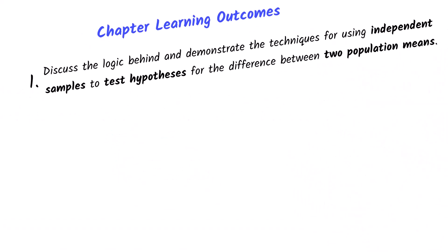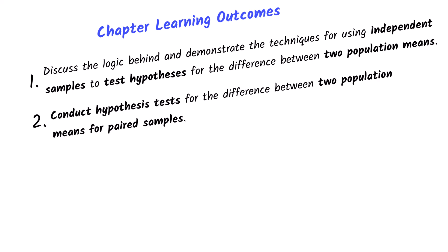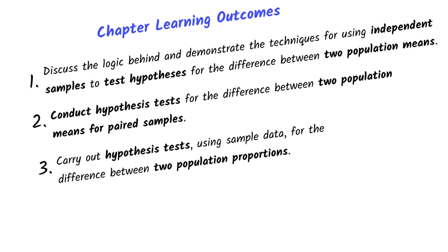For chapter 10, we'll be skipping the estimation process for two population means. However, in this video we'll discuss the different hypothesis techniques used for the difference between two population means, specifically for independent samples. Then we'll focus on how to conduct hypothesis tests for the difference between two population means for paired samples. And finally, we'll talk about how to conduct hypothesis tests for the difference between two population proportions.